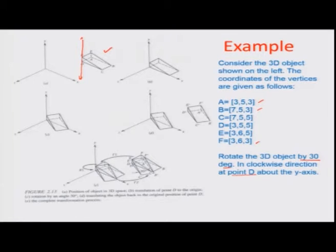We want to rotate this object in space by 30 degrees and find the final transformed coordinates A through F, so we can re-represent the whole object after rotation. This is essentially a drag-and-rotate operation as you would normally do on a CAD platform. What I want to show here through a series of geometric transformations is how complex the back-end computation is — though because of processor speed, the re-representation happens in less than a microsecond.